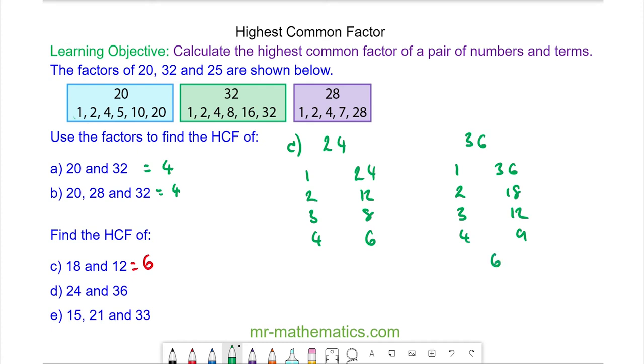We can see 1 is common, as is 2, 3, 4, 6 and 12. And because 12 is the biggest number, 12 is the highest common factor.